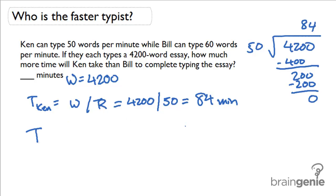Now what about the time for Bill? Well, it's the same equation: time is equal to work divided by rate. And notice here that Bill has a different rate—Bill can type at 60 words per minute. I know 42 divided by 6 equals 7, so I know this is 70 minutes.